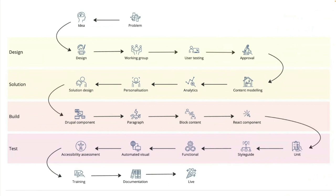Then there's content modeling — how does that design fit into the website's content model? Can we reuse what we have, or do we need to build something new? We then go through that with the analytics team to work out what they want to track for that component. The personalization team determines what parts of that component will get personalized. Then finally solution design — we've got all that information, we know how to do personalization, analytics, content model, we've got a tested design, and we can finally work out how we're actually going to build it.